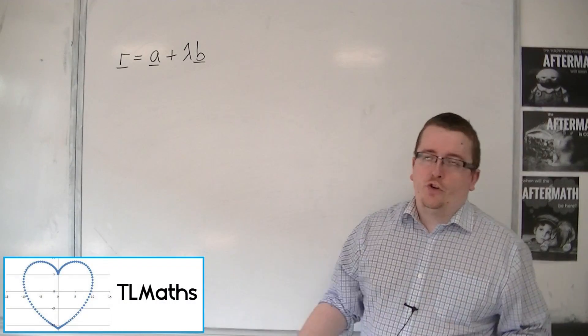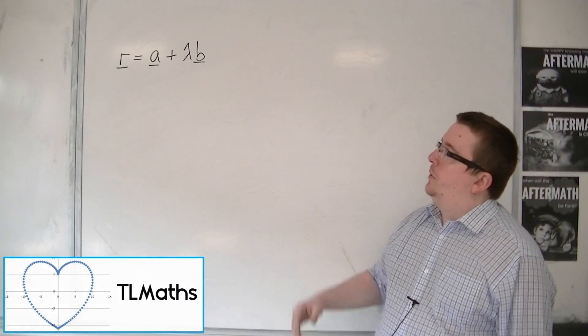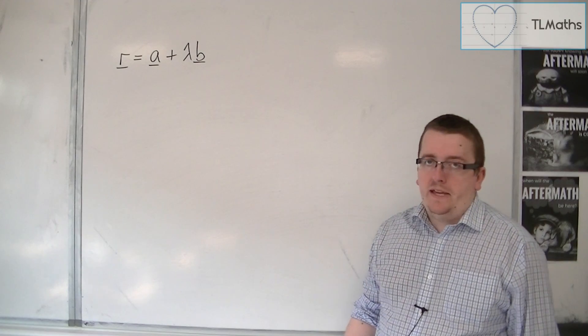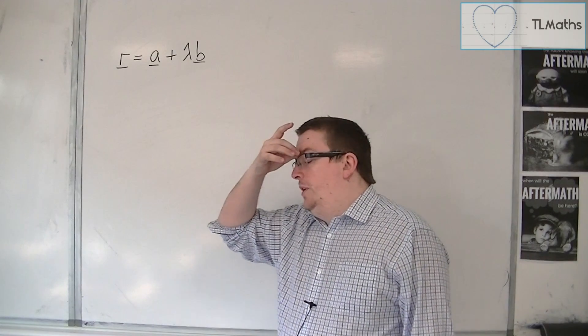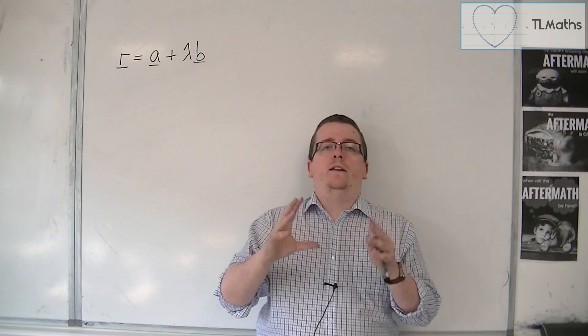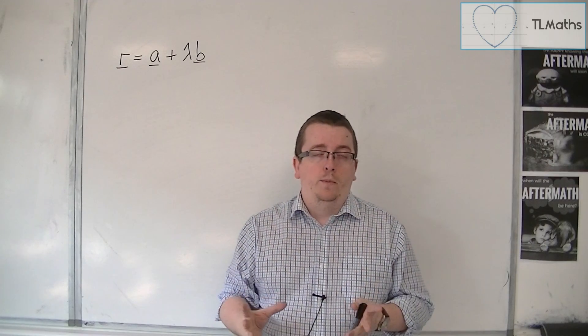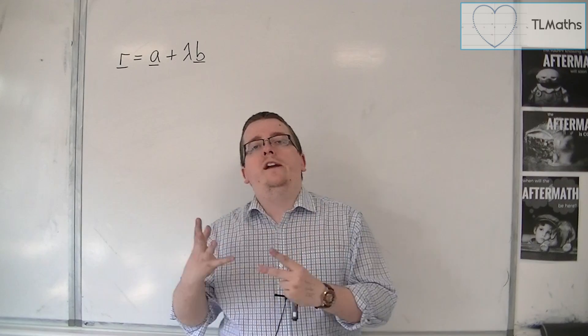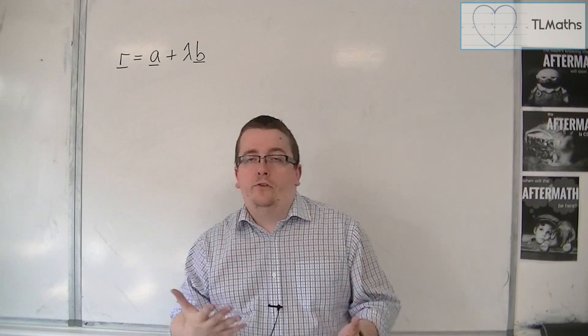So we've met the vector equation of a line, r is equal to a plus lambda b. You can also write the equation of a line in Cartesian form, so with x, y, and z for three dimensions.